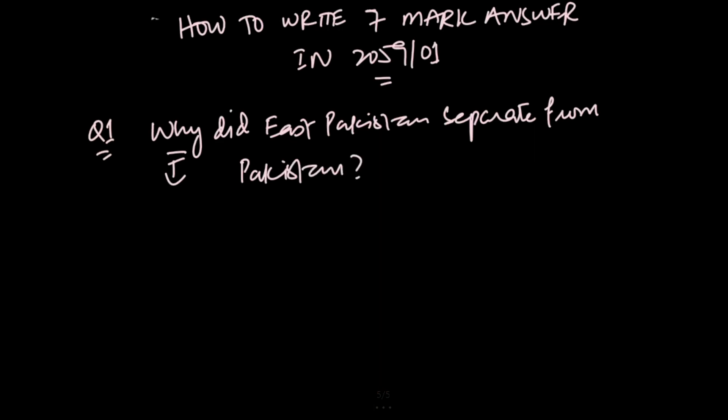If it is a question of 7 marks, then how will you be writing it? First line should be - you paraphrase the question. You should paraphrase the question that is written, like East Pakistan (I am just writing E.P.) separated from Pakistan, and then 'because', and then you have to write 3 points. If you look at the marking schemes as well, you have to be very vigilant that they are looking for specific 3 points.